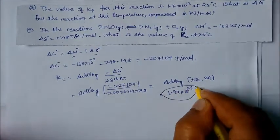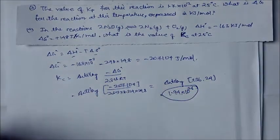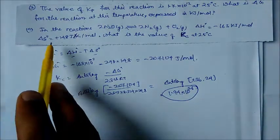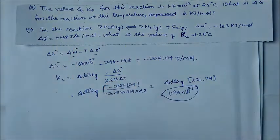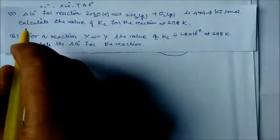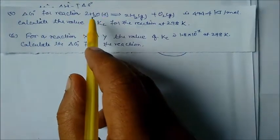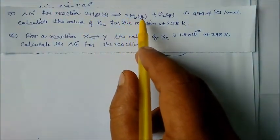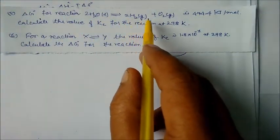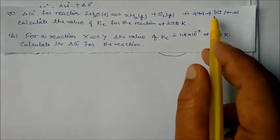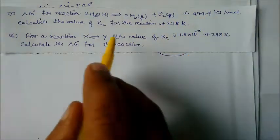So Kc = 1.94 × 10³⁶ at 25°C. Next question: ΔG° for the reaction 2H₂O(g) ⇌ 2H₂(g) + O₂(g) is +474.4 kJ/mol. We need to find Kc for this reaction.